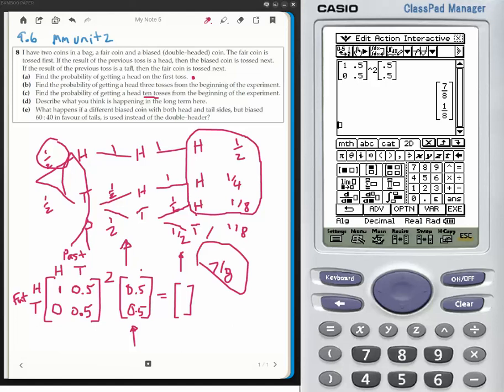So part B is going to be 7 eighths, or in decimal answer, 0.875.